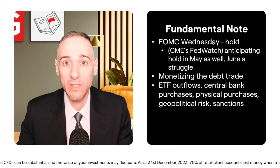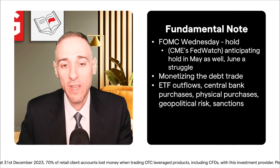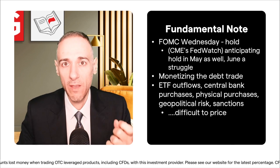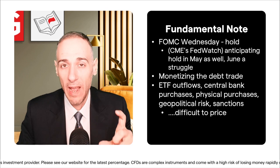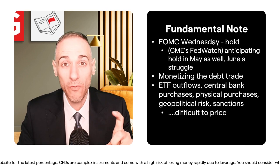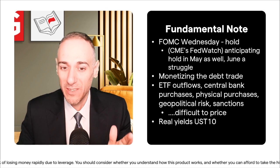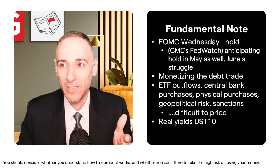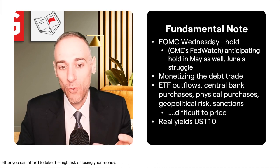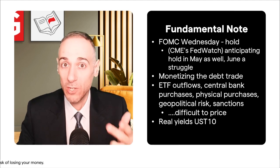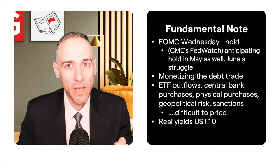On the ETF side, it's been a general story of outflows. However, investor and central bank purchases have had some notably strong months of physical buying. Geopolitical risk and sanctions have also led people to hold gold. That said, these factors are difficult to price in, leaving a lot of room for massive moves. The real underlying factor is real yields — many will note that based on the historic formula between US 10-year real yields and gold prices, prices should be much lower than they are now.